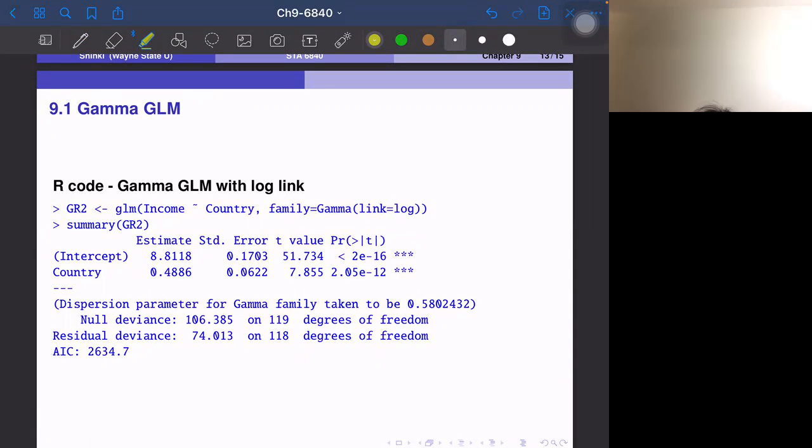And also we try the Gamma GLM with log link. Due to the data generating process, probably the identity link is better, but we do this also. So link logarithm, then we get the intercept and the country. And this is actually more comparable to the linear regression with the logged response. And actually these numbers are similar to the linear regression with the logged response. And this number was in linear model 8.36 and 0.54. And the numbers are similar and the t-value more significant. So we have smaller standard error. So it's slightly more reliable estimate and AIC is 2634. So it's similar to the previous one. And better than the linear regression.